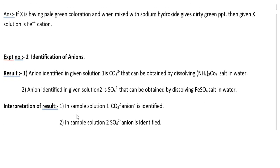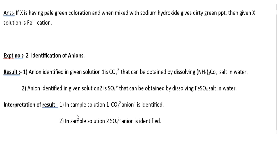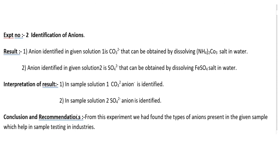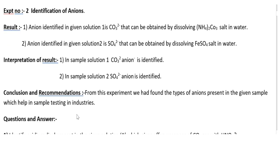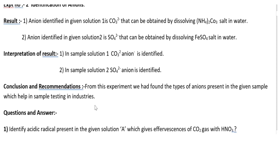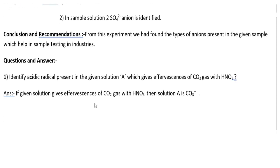Now let us see the result, interpretation of result, and question and answer for experiment number 2: identification of anion. The anion identified in given solution 1 is CO₃²⁻, obtained from (NH₄)₂CO₃ salt dissolved in water. The anion identified in given solution 2 is SO₄²⁻, obtained by dissolving FeSO₄ salt in water. Interpretation of result, conclusion, and recommendation are also given.